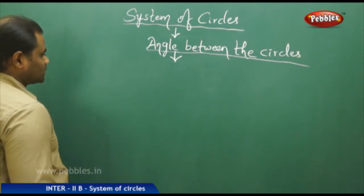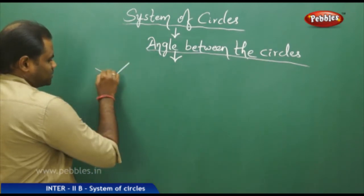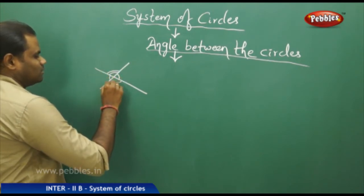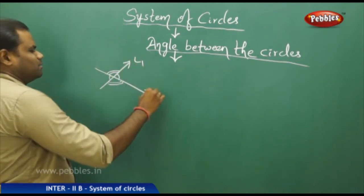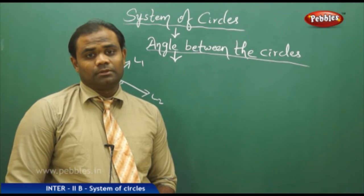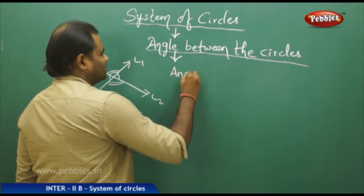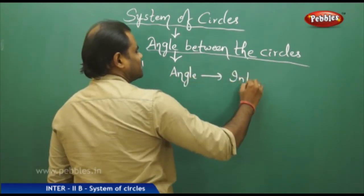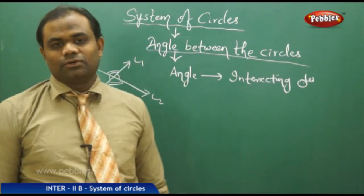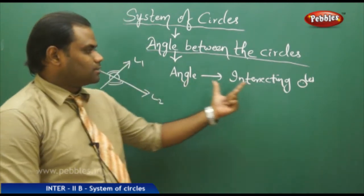We have seen that the angle between two intersecting lines is defined as the angle formed at their intersection. Similarly, two circles are said to have an angle between them provided the two circles are intersecting. The important factor is that the angle depends on intersecting circles. If the two circles are not intersecting, we don't have an angle between them because they are simply far apart from each other.